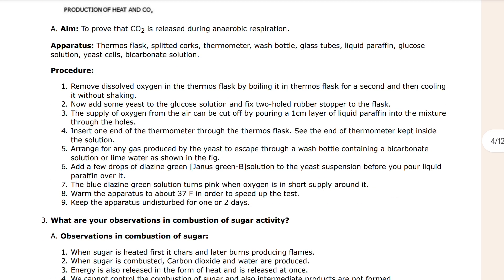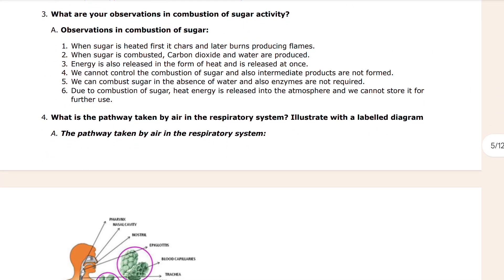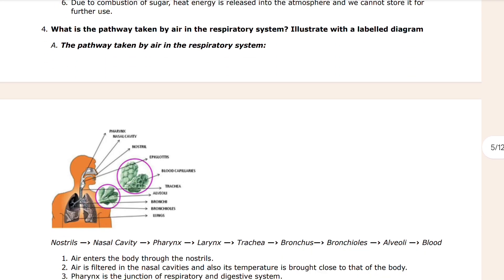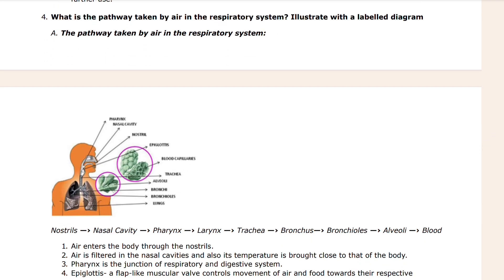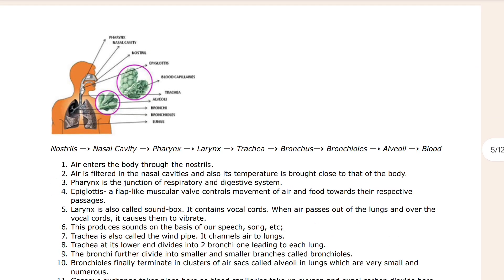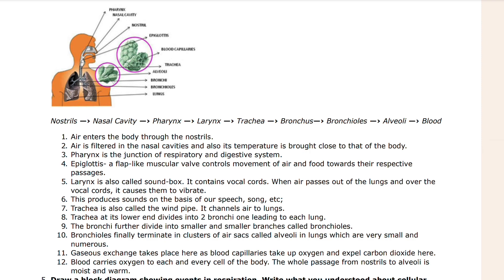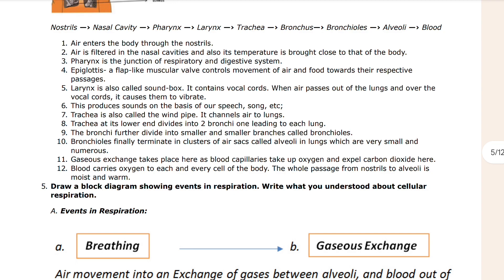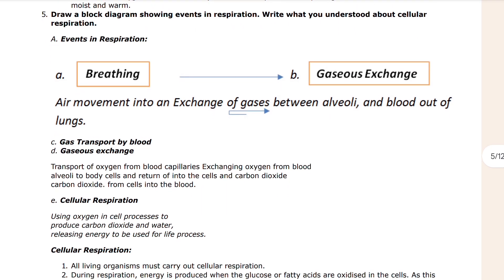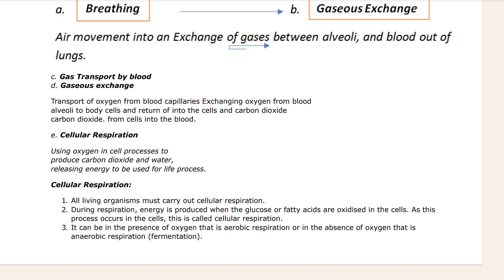Then you can see: what are the observations in the combustion of sugar activity? After that, the fourth question is: what is the pathway taken by air during respiration? Here you can see a diagram — it is also given in your textbook, something related. Then: draw a block diagram showing events in inspiration.